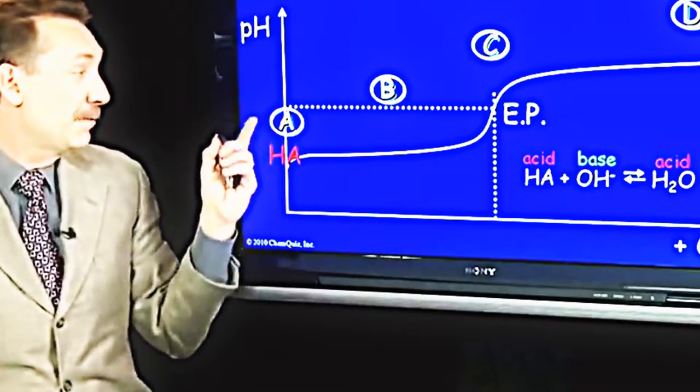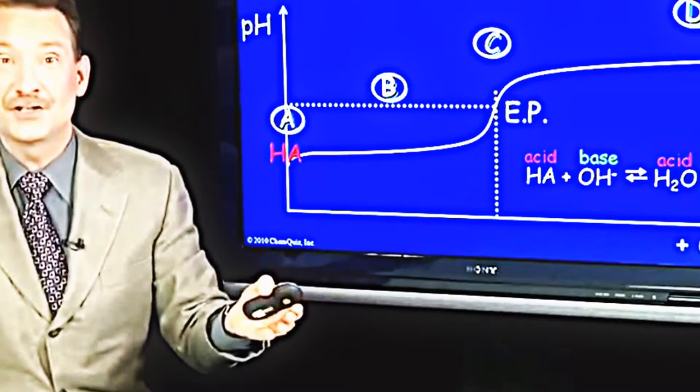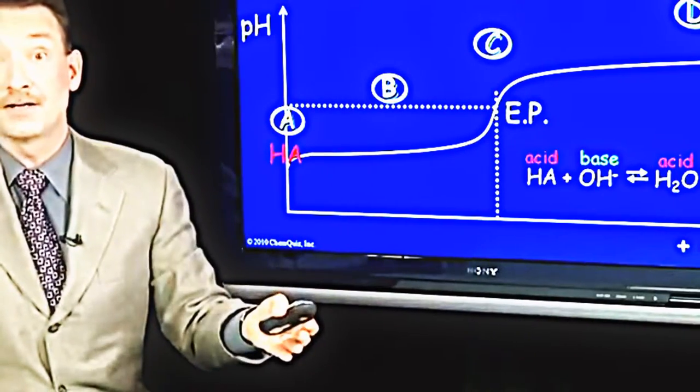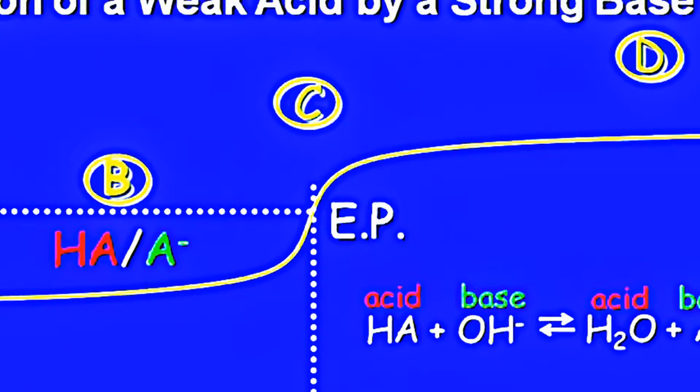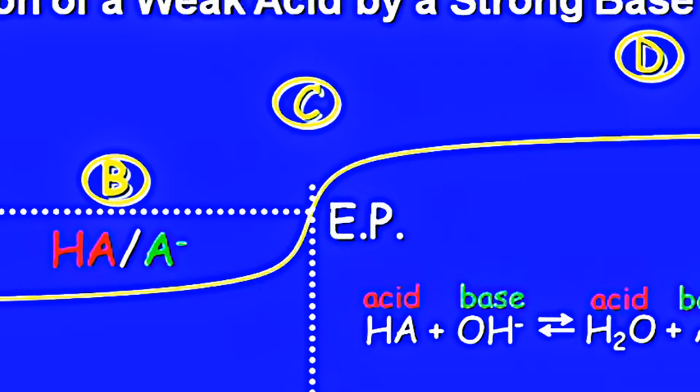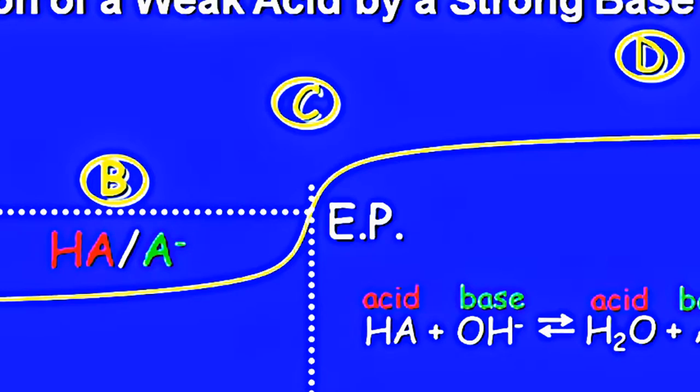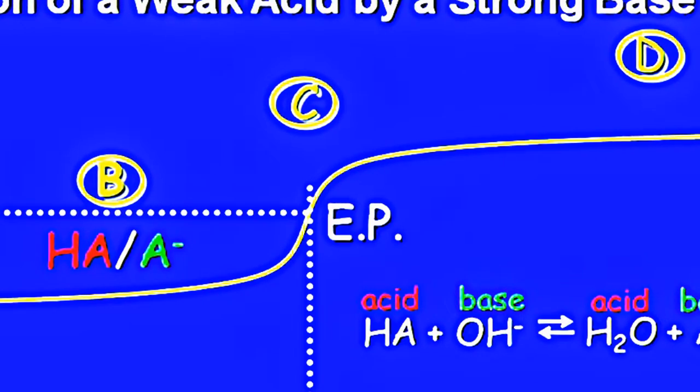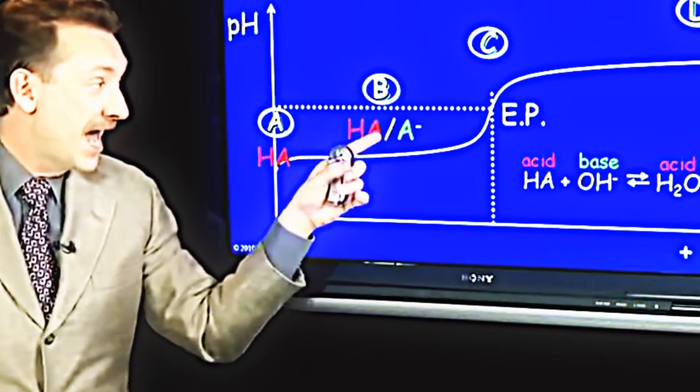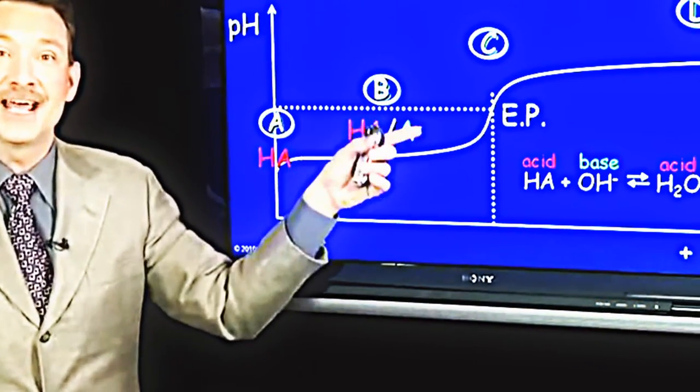If you think about what's happening at point A, it really is just a solution of a weak acid. And we already know how to calculate the pH around point A. Point B, let's say we're exactly halfway between the equivalence point, the endpoint, and the starting point. So we've converted half of the HA to A minus.